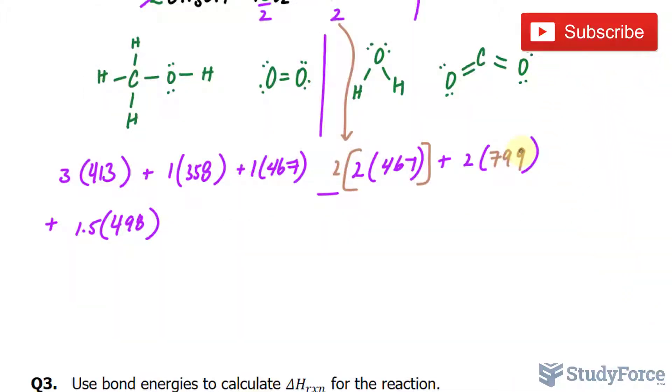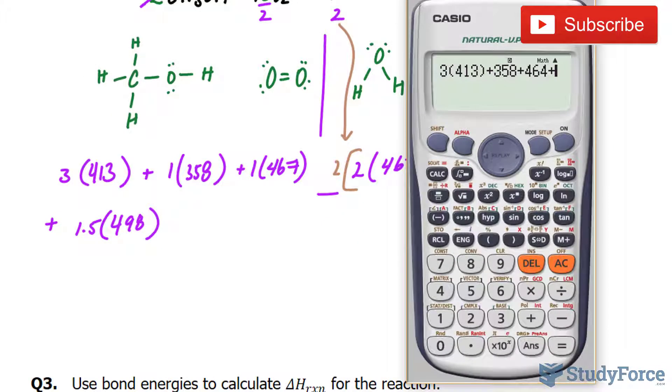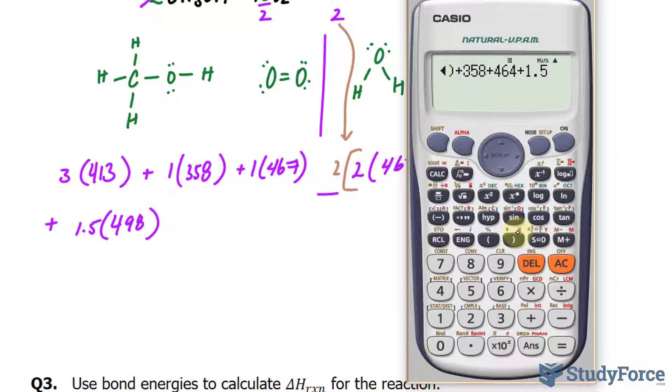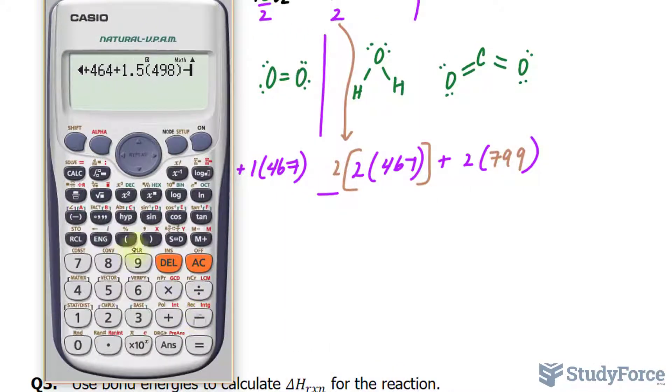Now let's use our calculator to come up with the total answer. So, so far, I've added this number, this number, and that number, I'll add 1.5 times 498, and then I'll subtract.